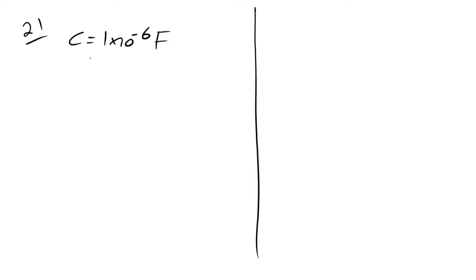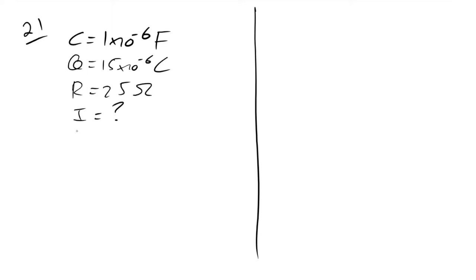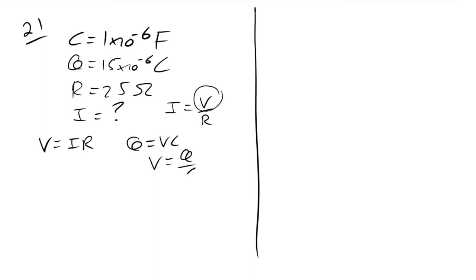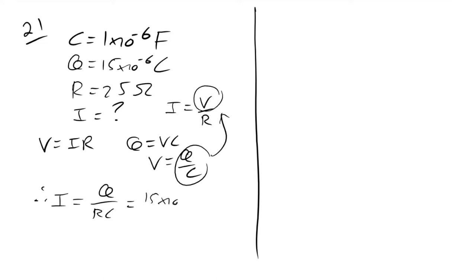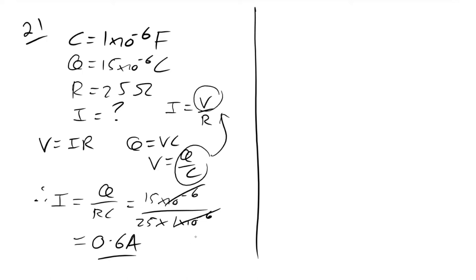Question 21: same capacitance and charge, resistance R = 25 Ω. Current = Q/(RC). Substituting: I = (15×10⁻⁶) / (25 × 1×10⁻⁶). The 10⁻⁶ factors cancel, giving 15/25 = 0.6 A. The answer is C.